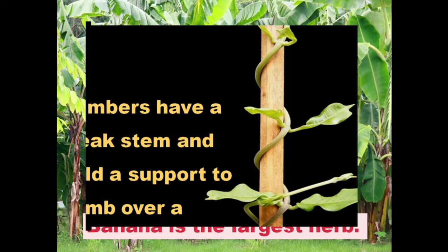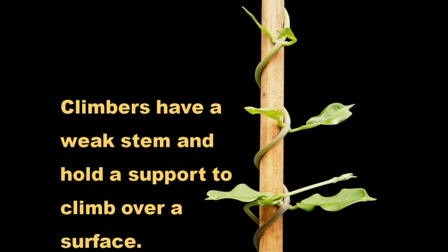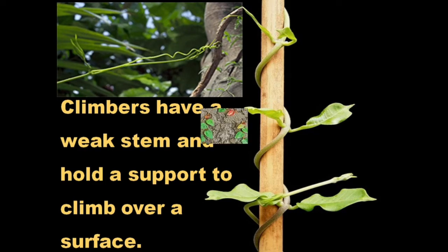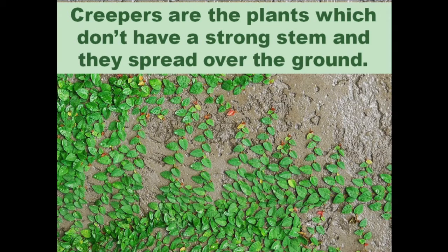Climbers are plants which do not have a strong stem; rather a weaker one, and they hold a support to climb over a surface by the help of thread-like structures called tendrils. Creepers are plants which also do not have a strong stem and cannot hang on stronger plants. So they crawl over the ground — for example, watermelon, which has a very heavy fruit.